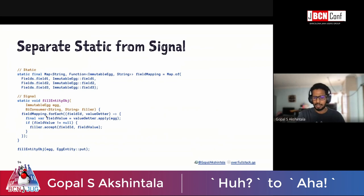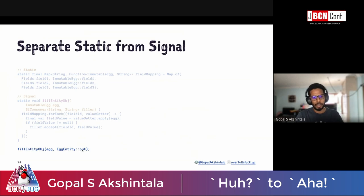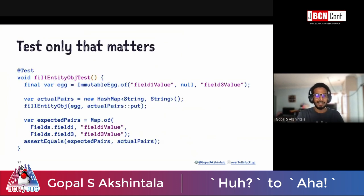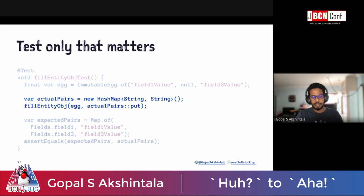Looking at the same example, refactor to separate the static field mappings — which you probably don't need tests for — from the algorithm that fills. The algorithm takes a BiConsumer used as a filler to fill fields from POJO to Entity, and all it cares about is calling that function — it doesn't know what it's filling into. You can then test this algorithm using a HashMap instead of Entity, since the algorithm doesn't care if it's HashMap.put or Entity.put. This test is no longer brittle and doesn't fail when you add new fields.